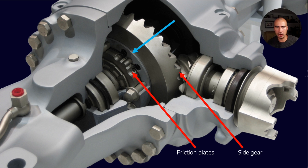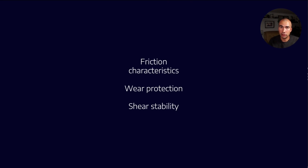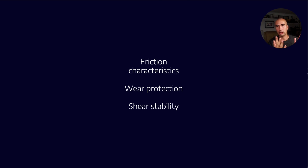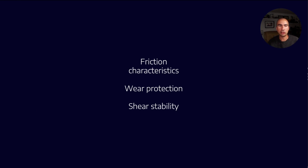From a lubricant standpoint, what does that mean? What kind of properties do we want to impart? It means a couple of things: friction characteristics — in order for the clutch plates to engage correctly we need a fluid that allows that specific friction. We also want enhanced wear protection, because it's gears, and we want shear stability. These are the kinds of things we have to think about when formulating for limited slip differentials.